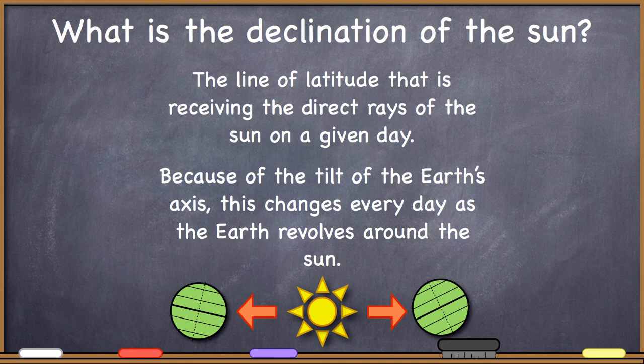So what is the declination of the sun? The declination of the sun is the line of latitude that is receiving the direct rays of the sun on a given day. And of course, because of the tilt of the earth's axis, this changes every day as the earth revolves around the sun. So the declination of the sun changes every day.